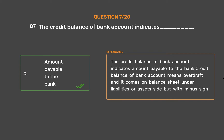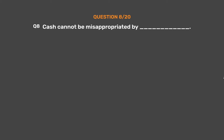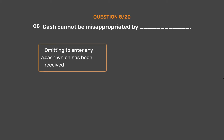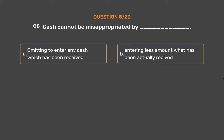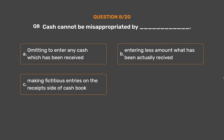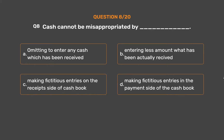Question number eight: cash cannot be misappropriated by — Option A: omitting to enter any cash which has been received. Option B: entering less amount than what has been actually received. Option C: making fictitious entries on the receipt side of cash book. Option D: making fictitious entries in the payment side of the cash book.